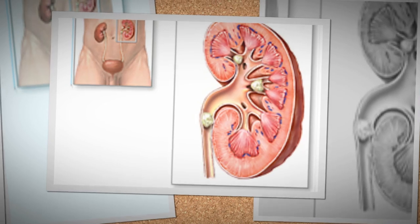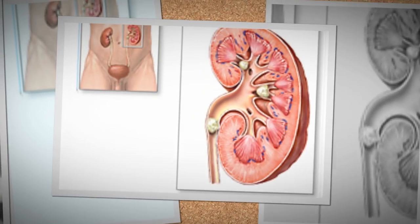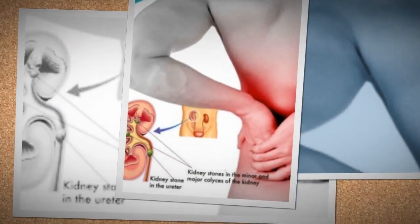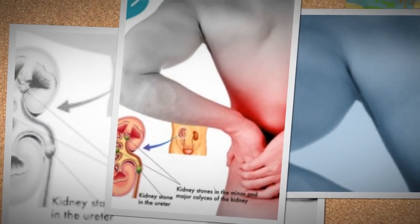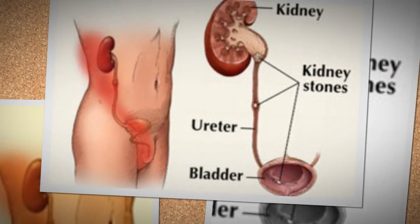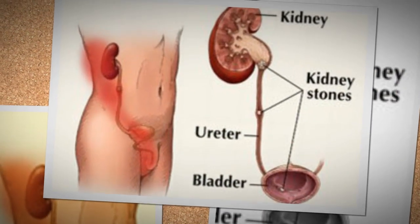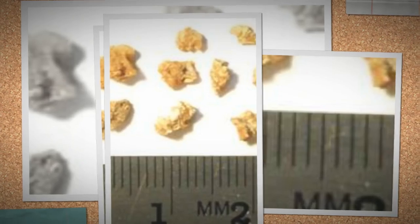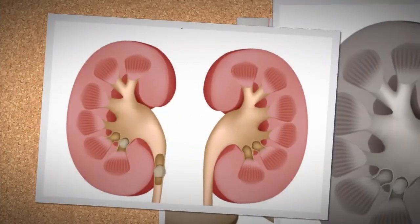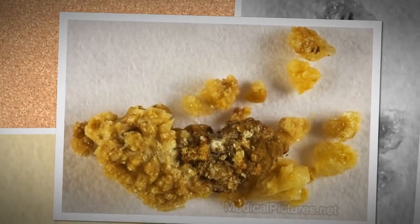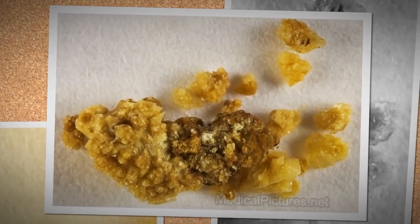Cystone causes disintegration of the calculi and crystals by acting on the mucin which binds the particles together. Any person who has developed a kidney stone in the past is likely to develop more in the future. Cystone effectively prevents the formation of stones in future as well.